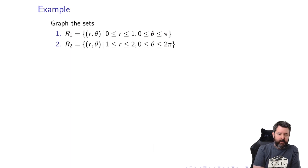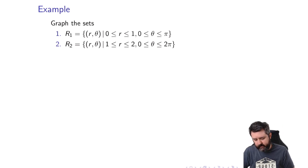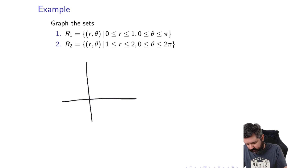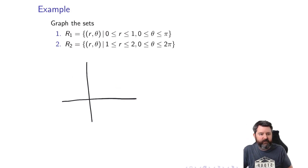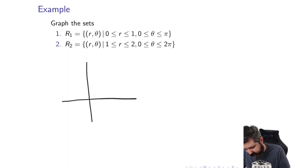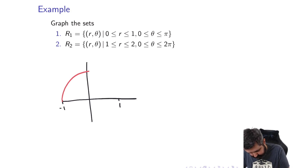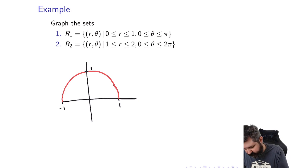Let's look at a particular kind of region. Suppose we have a region R₁ where r is between 0 and 1 and θ is between 0 and π. θ between 0 and π means it goes from θ=0 to θ=π, which is a full half circle. r between 0 and 1 means the distance from the origin is between 0 and 1. So what we get is the upper half of the unit circle centered at the origin — that whole shaded region.